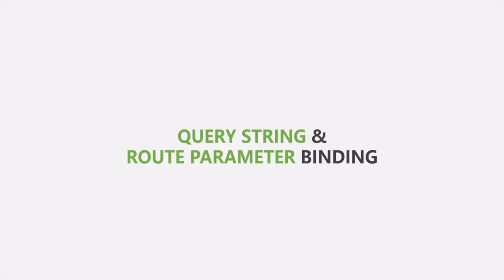When we make a request to an ASP.NET Core application, we might need to provide some data to it. This data can be provided in different ways. For example, we can use query string or route parameters or request body. It is the responsibility of the ASP.NET Core application to retrieve the data passed to it before starting to process the request.